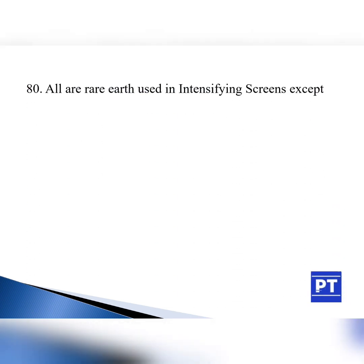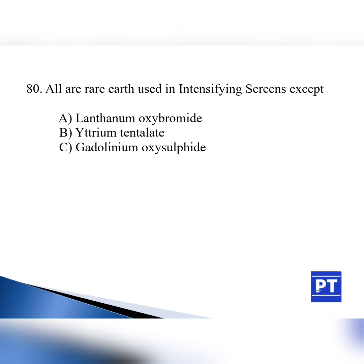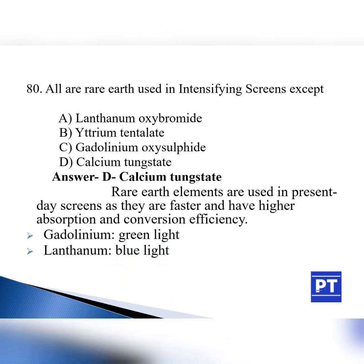Question number 80: All are rare earths used in intensifying screens except — option A: lanthanum oxybromide, option B: yttrium tantalate, option C: gadolinium oxysulfide, option D: calcium tungstate. The answer is option D, calcium tungstate. Rare earth elements are used in present-day screens as they are faster and have higher absorption and conversion efficiency. X-ray photons are converted into light photons, and the rare earth phosphors are very fast in conversion efficiency. Gadolinium responds to green light of the visible spectrum, while lanthanum responds to blue light.